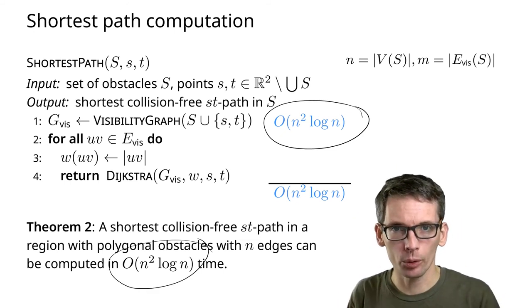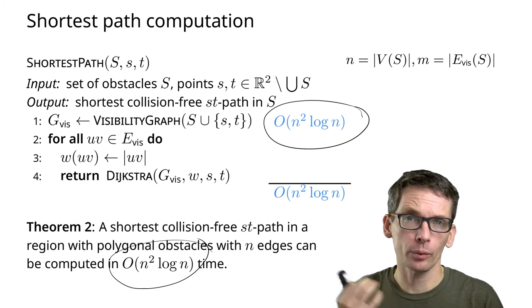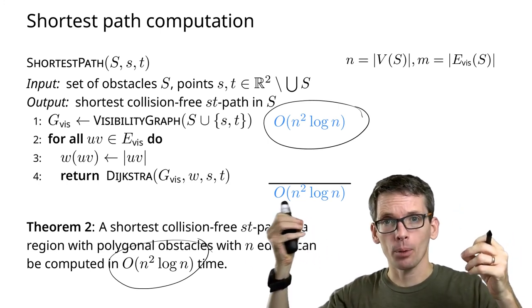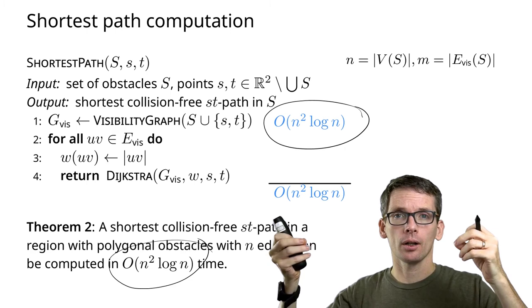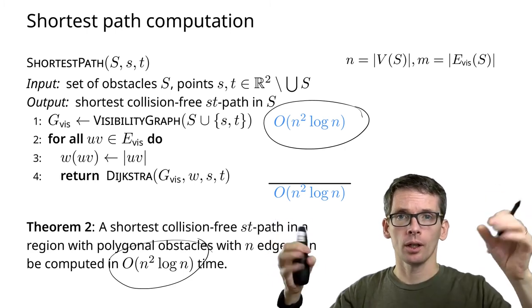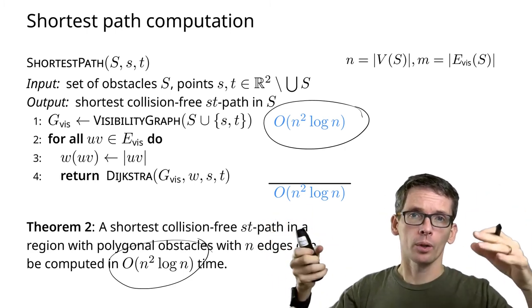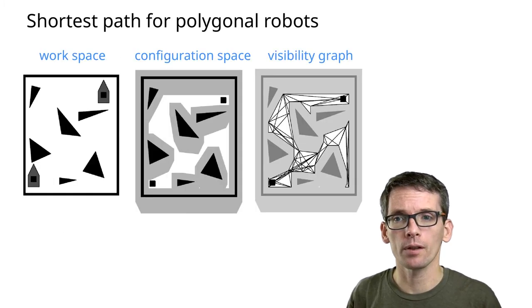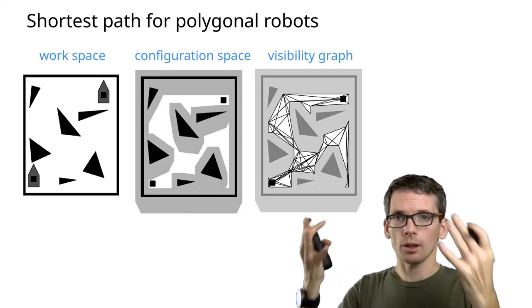Now we've computed the visibility graph that would allow us to compute the shortest path from a point robot start to its goal. If we have polygonal robots, we can simply do what we previously did.